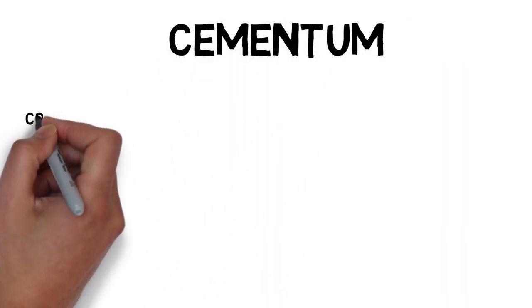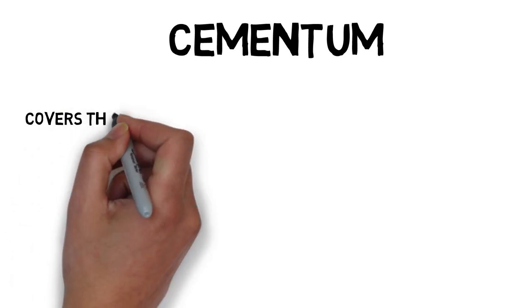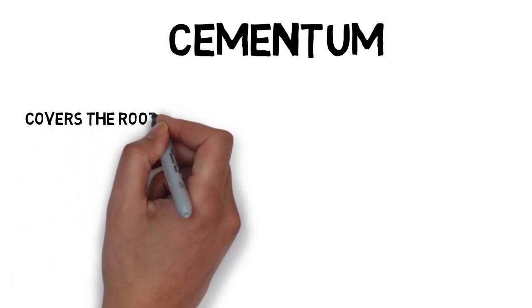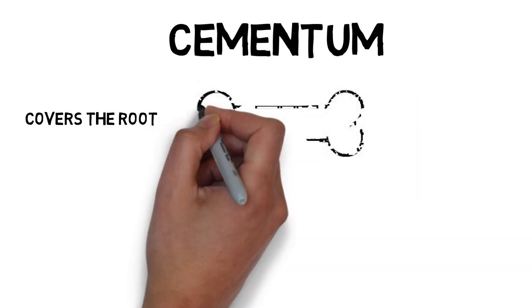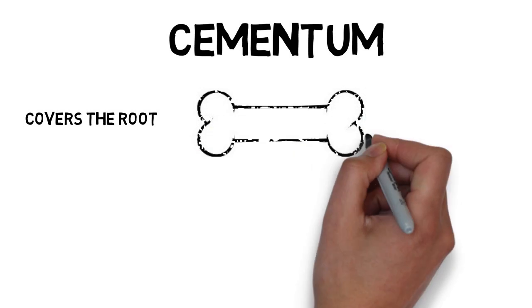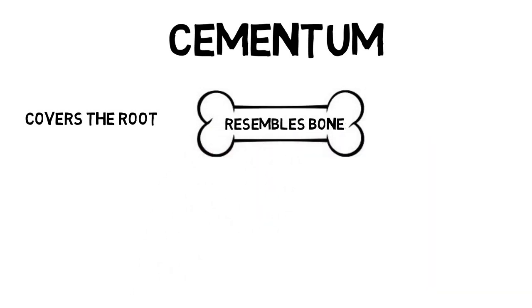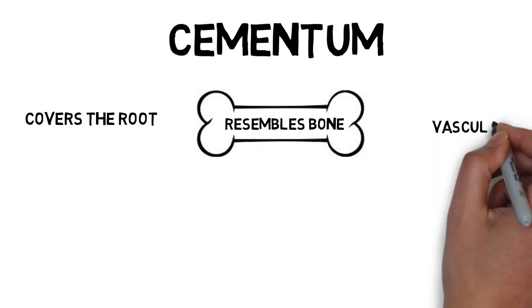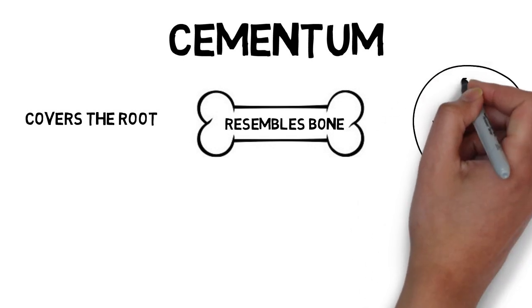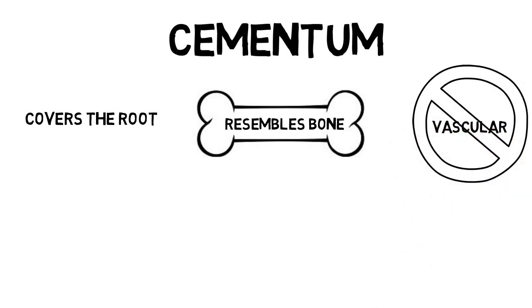There is another structure worth mentioning — the cementum. Cementum is also a mineralized structure that covers the root of the tooth. Just as enamel covers the crown, cementum covers the root, lying outside the dentine. It resembles bone the most out of all tooth structures, but the main difference between bone and cementum is that bone is vascularized while cementum is not — similar to dentine and enamel. I'll be covering cementum in more detail in subsequent lectures.